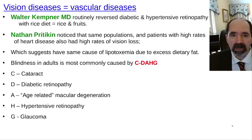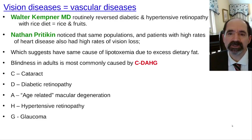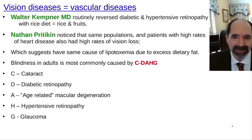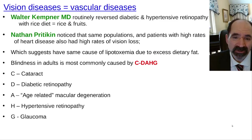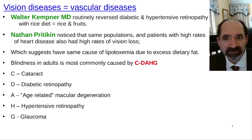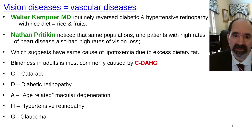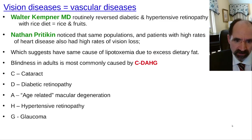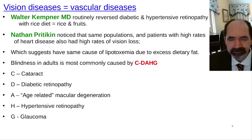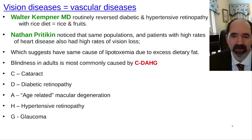We're going to talk about vision diseases and the key points of this lecture. Vision diseases equal vascular diseases. All of the most common causes of blindness in adults are due to vascular disease. They're sort of variations on a theme — it's like a Bach fugue, if you will.